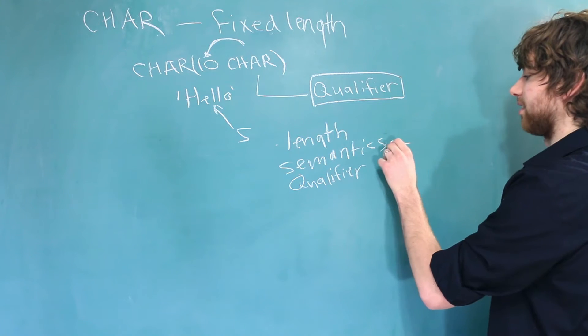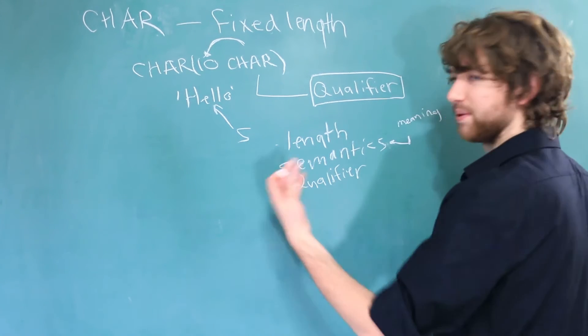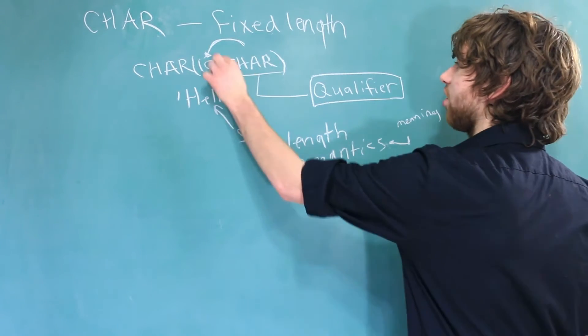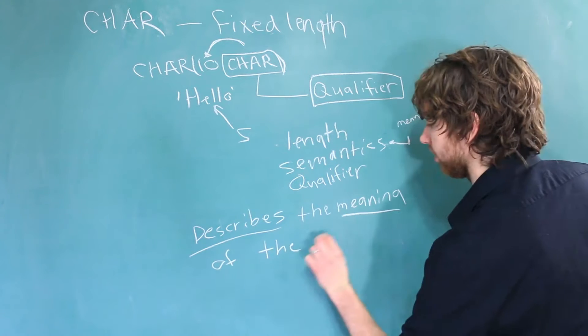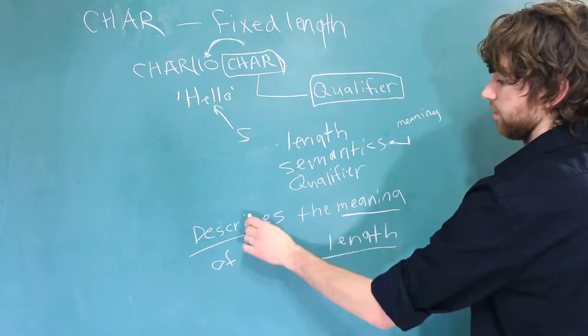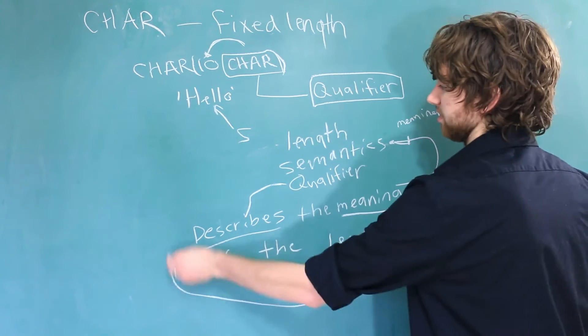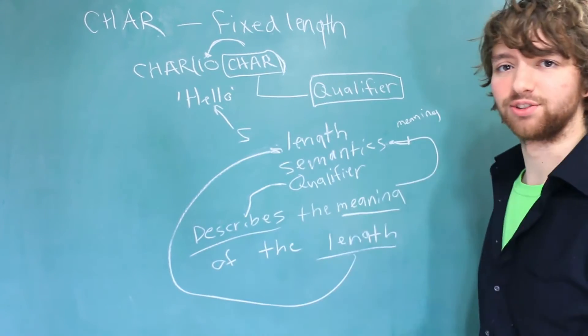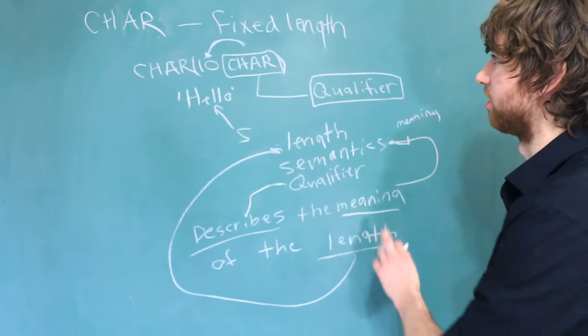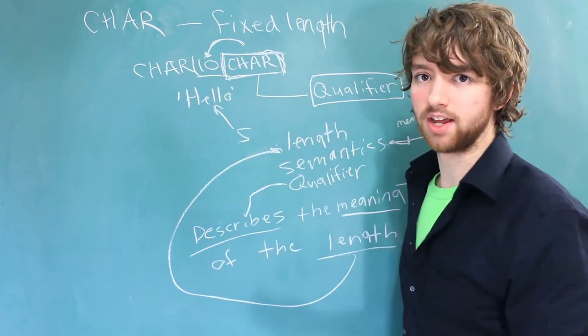So what does semantics mean? Semantics describe the meaning of something. So if you wanted to put this in English, you could say that this char describes the meaning of the length. So the describes would be the qualifier, the meaning would be the semantics, and the length would obviously be the length. But if that doesn't make any sense or you just think it's a bunch of useless information, all you got to think of is that this char describes how we interpret that 10.